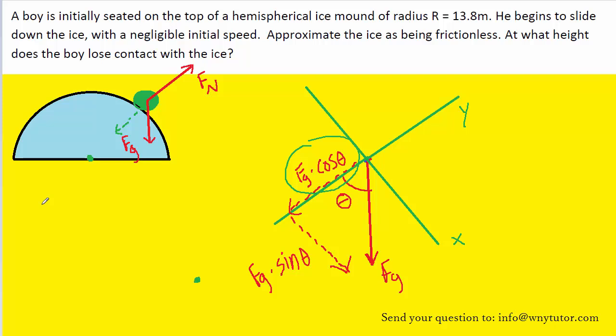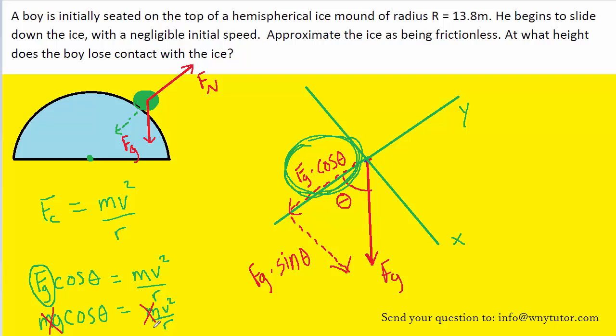We would next recall that centripetal force is represented in the following equation. And since we just noted that the component of gravity along our y-axis is the centripetal force, we can go ahead and substitute that in for fc. Let's go ahead and replace fg with an equivalent expression mg since fg is equal to mg. And then since mass appears on both sides of the equation, we can cancel that out, leaving us with the following result.